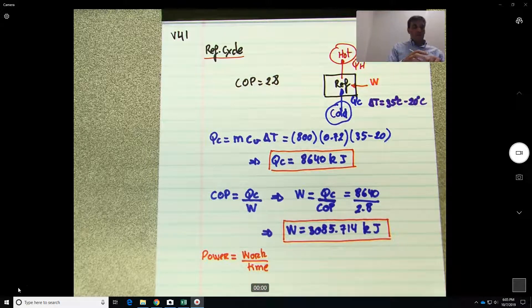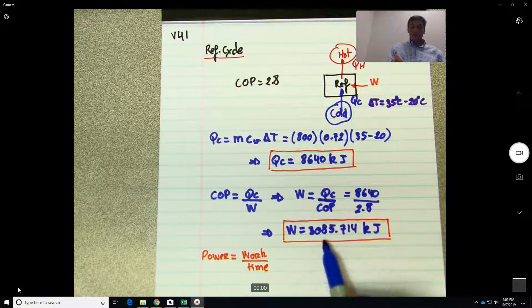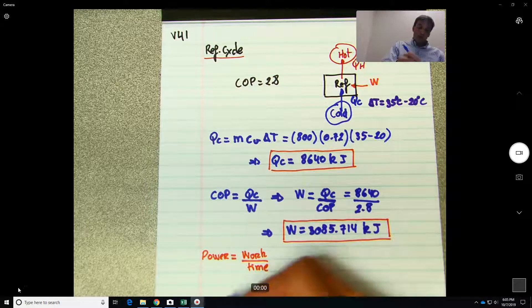So in this case, the work is given over here and we know it's for 30 minutes. So the power—per unit time means dW/dt—would be equal to what?